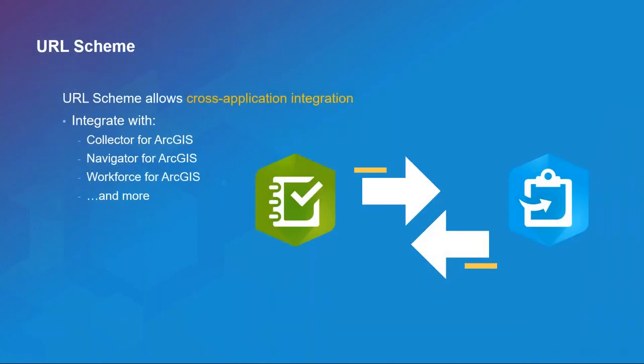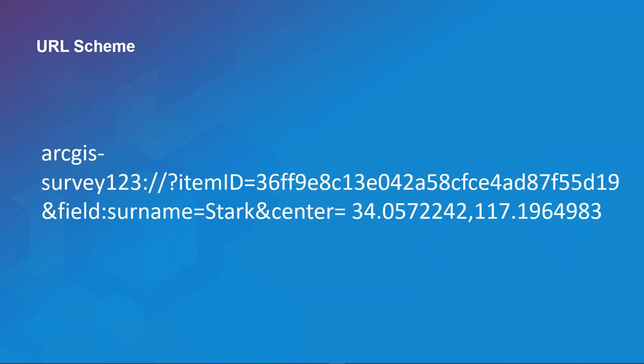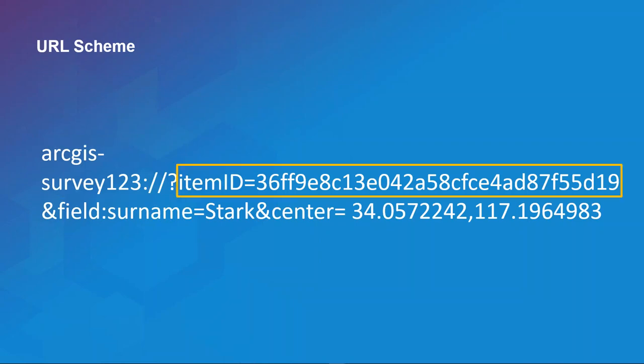With our design considerations out of the way and our survey published, let's talk about how we can incorporate our survey into existing solutions. The URL scheme allows you to integrate with other applications across the ArcGIS platform as well as third-party applications. You can do more than just open another app from Survey123 — you can actually pass values across to the other application. Let's break this down: the first portion defines which app we will open (in this case Survey123), and the next portion is the item ID of the form.